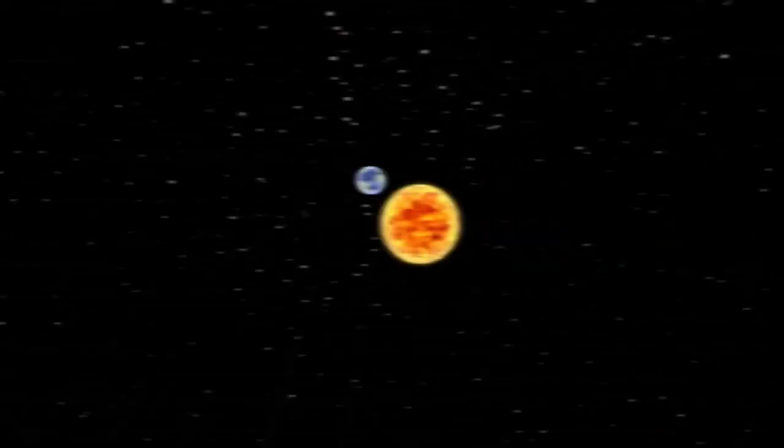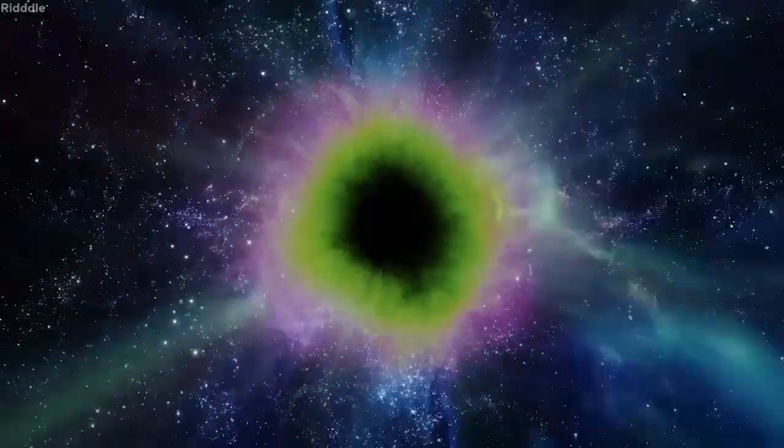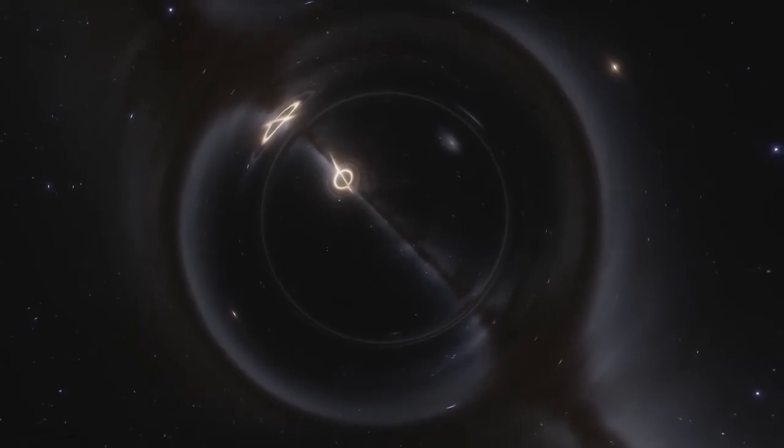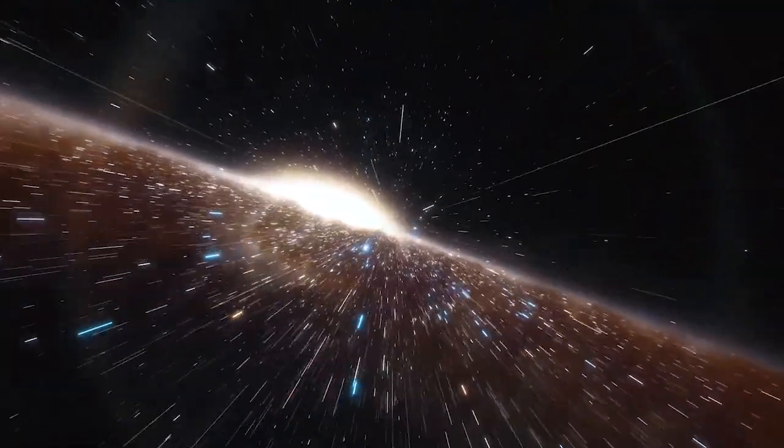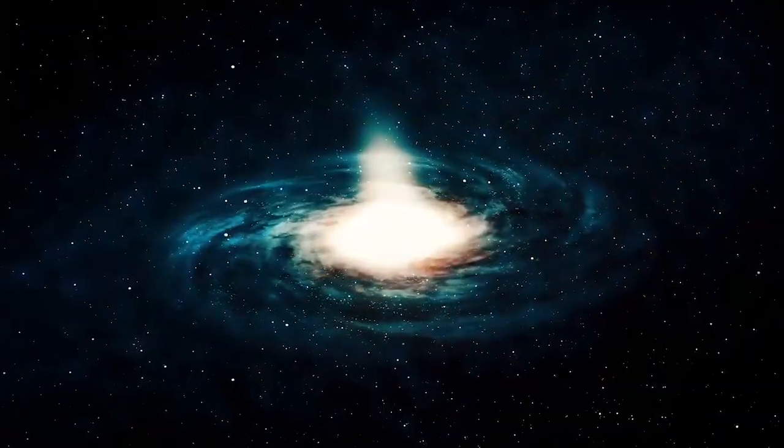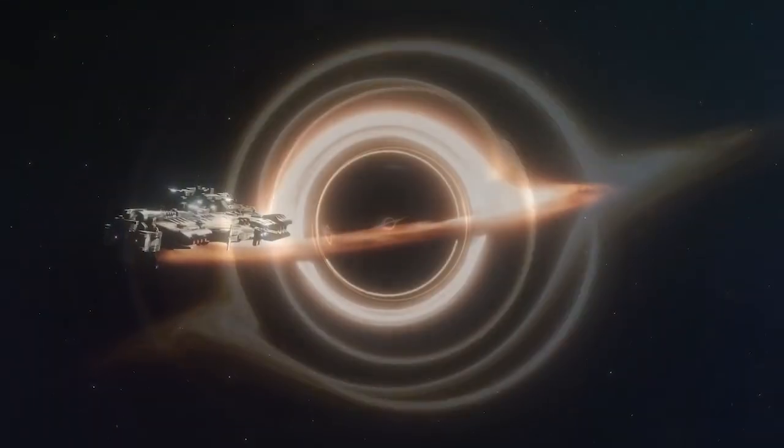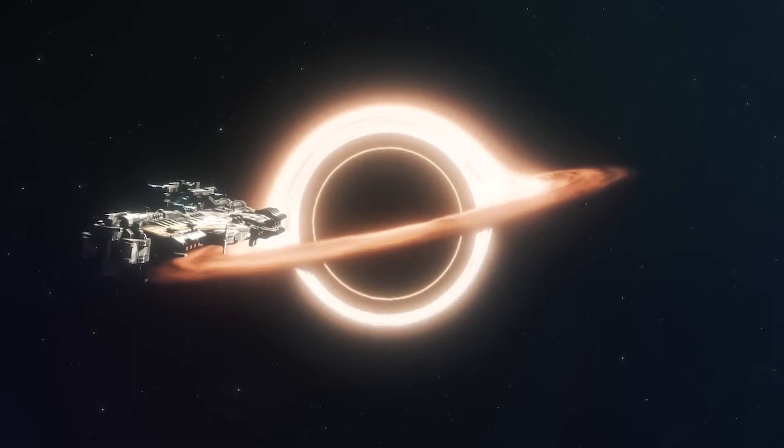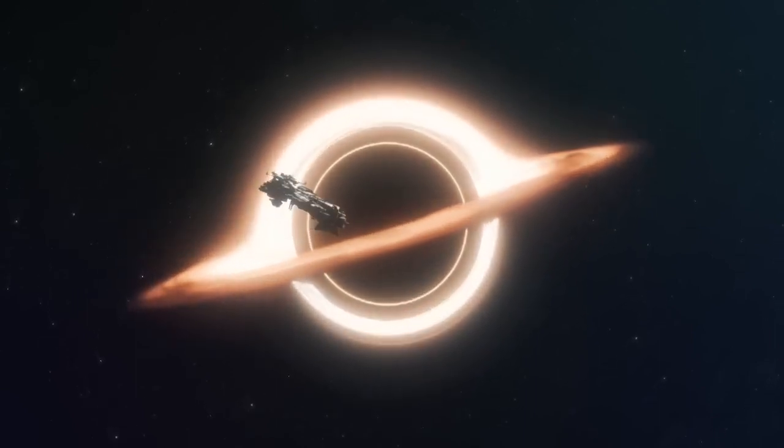However, some physicists have proposed an alternative explanation for cosmic inflation. They suggest that our universe may be a region inside a black hole, and that the rapid expansion of the universe was not due to cosmic inflation, but rather a consequence of the black hole's formation. According to this idea, a massive star collapsed and formed a black hole, and our universe was formed inside it. As the black hole gained mass, it expanded, causing the universe inside it to expand as well. This expansion would have given the universe the appearance of cosmic inflation.